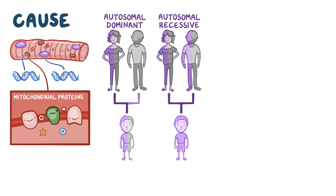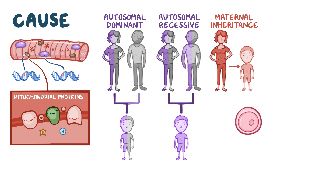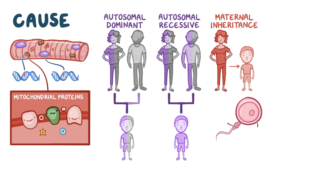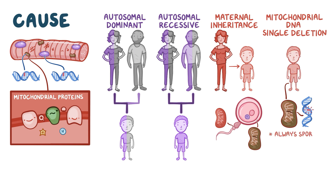Mutations in the mitochondrial DNA follow maternal inheritance, meaning that only an affected woman can pass on the disease to her children. This is because, typically during fertilization, the father's mitochondria are left behind, while the sperm's nucleus alone enters the egg. The exception is the mitochondrial DNA single deletion, a common cause of primary mitochondrial myopathy, which is always sporadic and cannot be transmitted to the offspring.